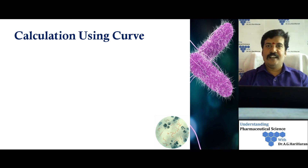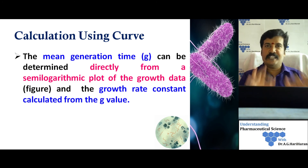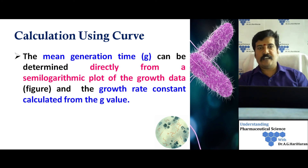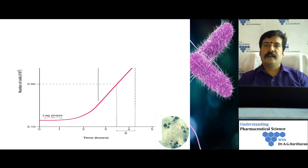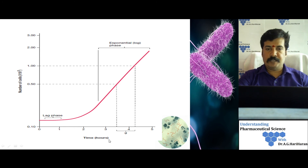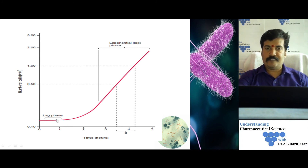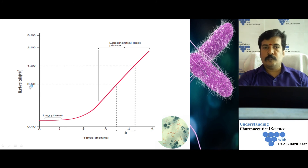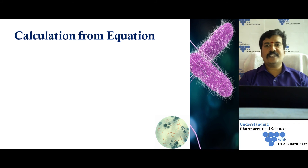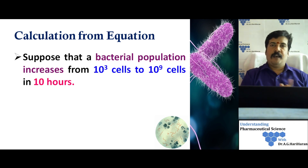The mean generation time can be calculated in two ways: using a curve or using an equation. For the graphical method, we plot the exponential phase on semi-log paper with incubation time on the x-axis and log of viable cells on the y-axis. We select two points on the linear curve where the cell count exactly doubles — for example, from 0.5 × 10^7 to 1.0 × 10^7 — and read off the corresponding time interval on the x-axis, which directly gives g.